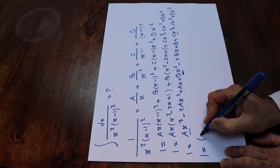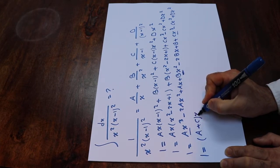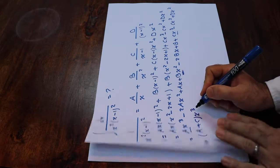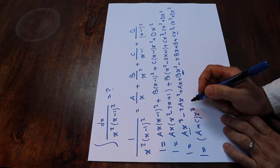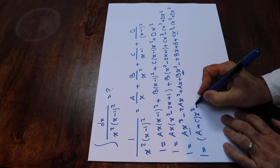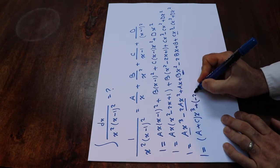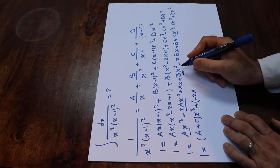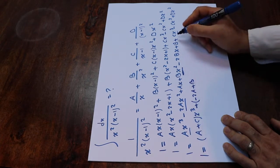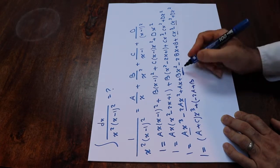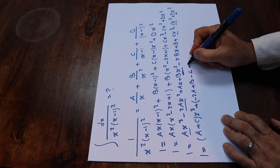Now let's factor the terms by degree. The coefficient of x³ is (A plus C). The coefficient of x² is (minus 2A plus B minus C plus D).